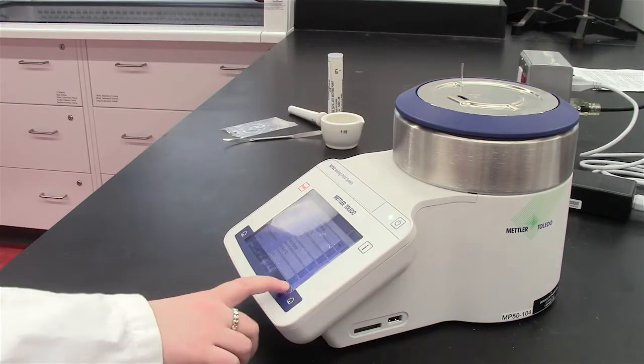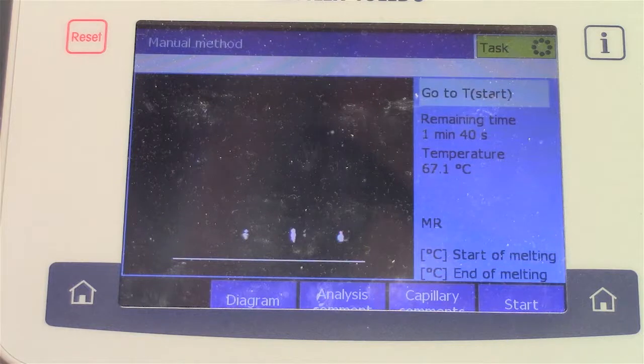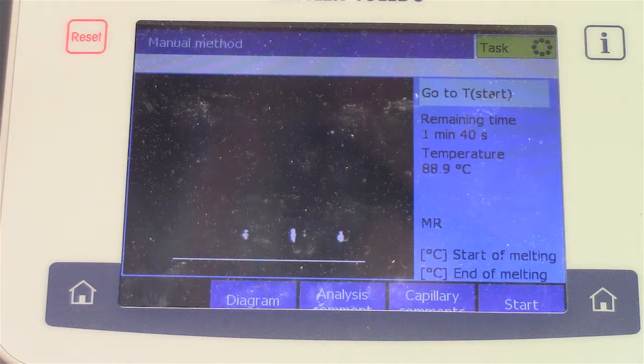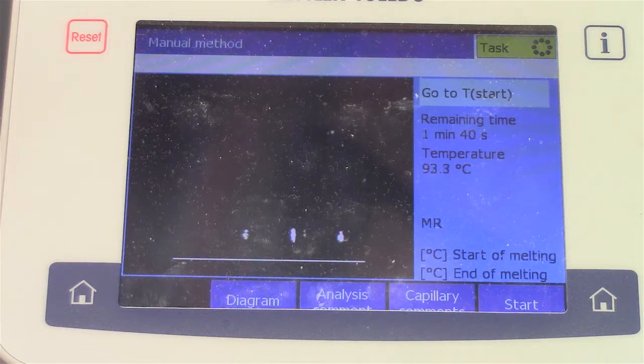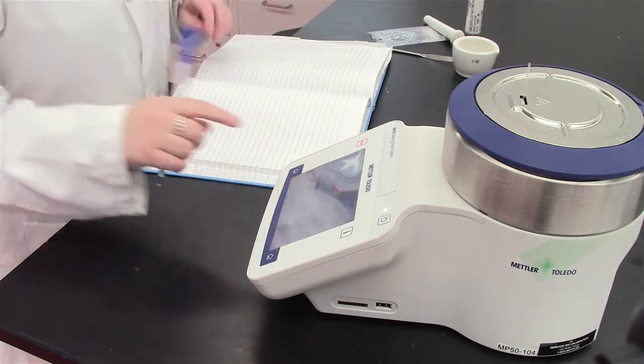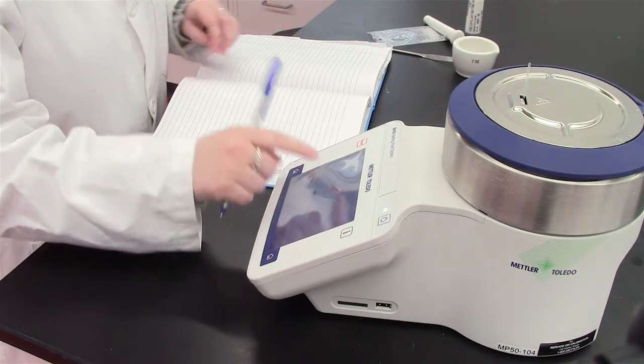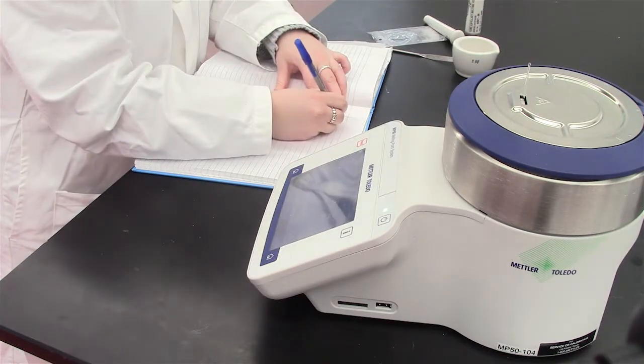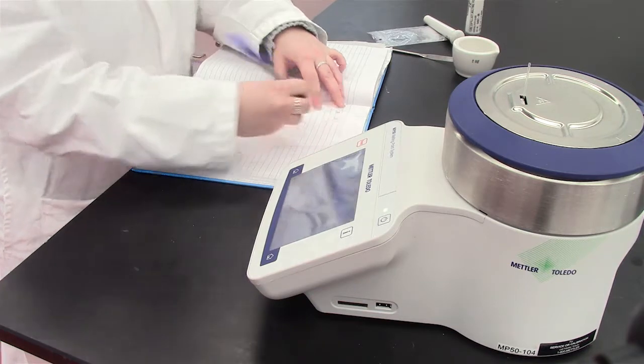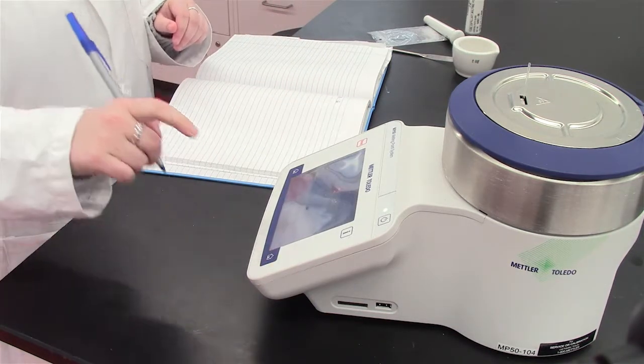Press the start button and wait for the melting point to appear on the screen. You can view your capillary and solid melting on the screen of the machine. Record the melting point of your substance within your notebook and clear the screen by pressing the home button for the next student.